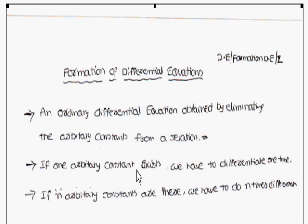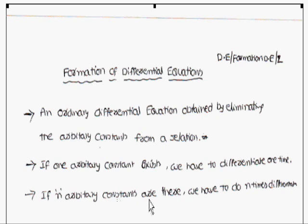If one arbitrary constant is there, we have to differentiate one time. If two arbitrary constants are there, you have to differentiate two times. If n arbitrary constants are there, you have to differentiate n times. That is the main concept.